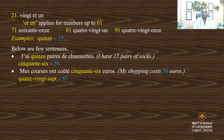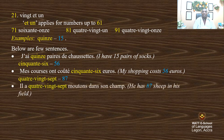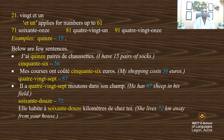87. 'Il a 87 moutons dans son champ.' He has 87 sheep in his field. 72. 'Elle habite à 72 km de chez toi.' She lives 72 km away from your house.